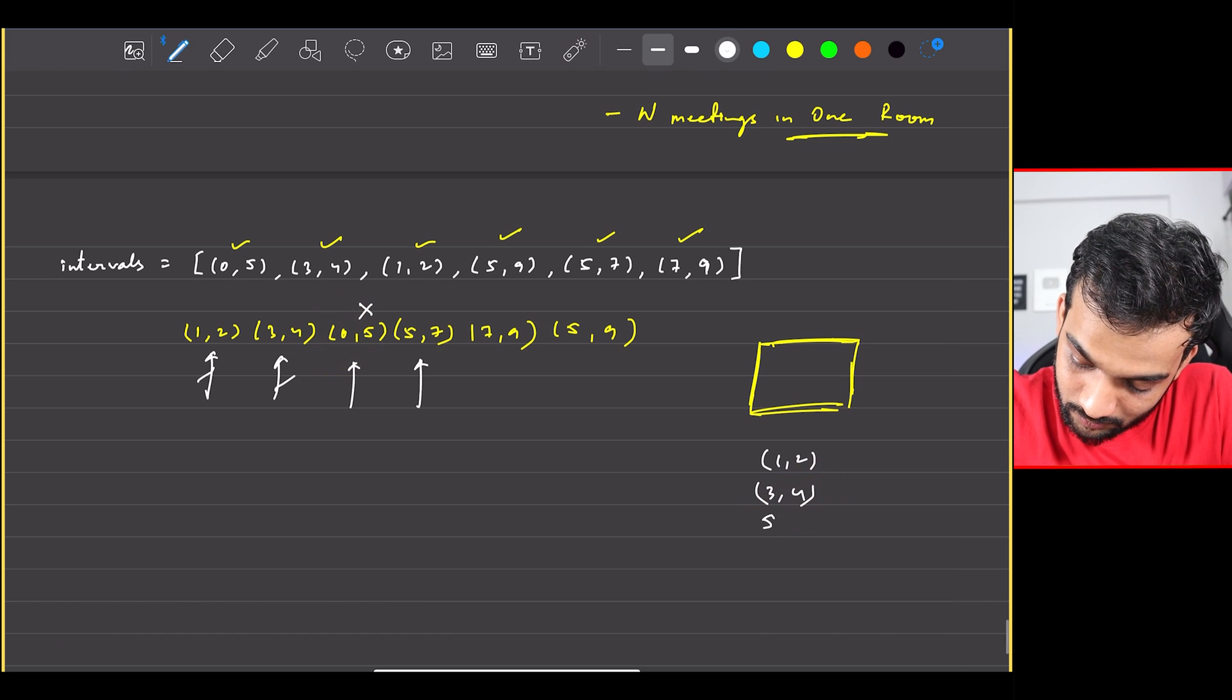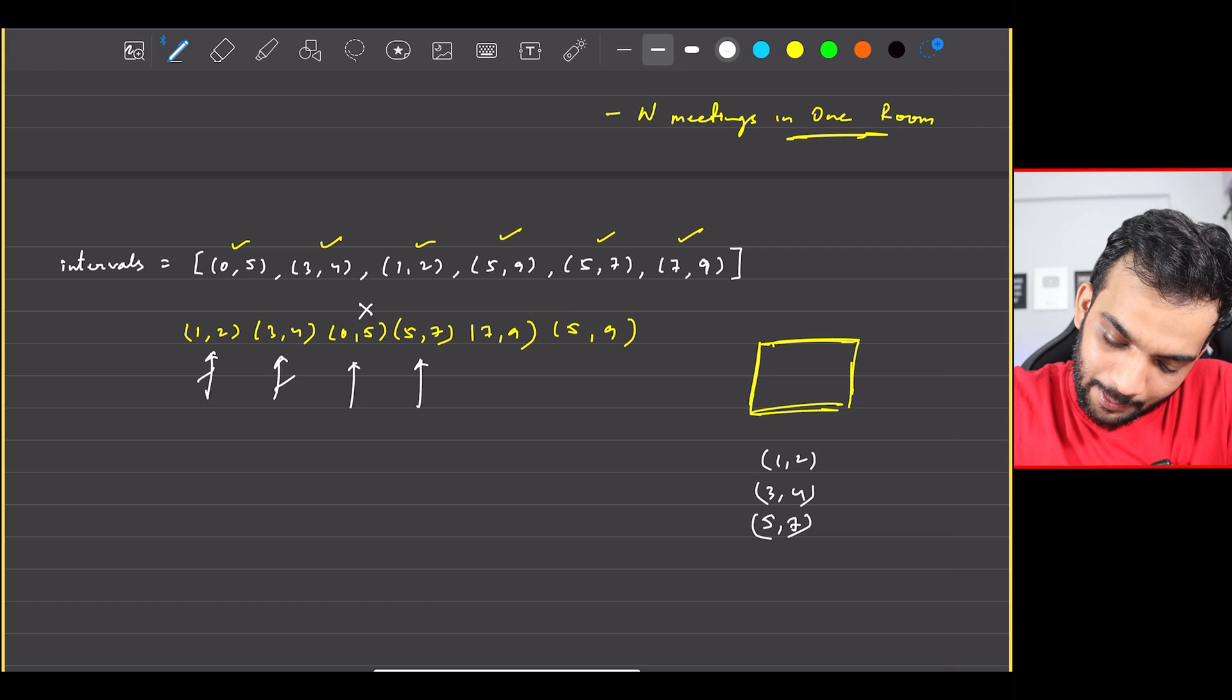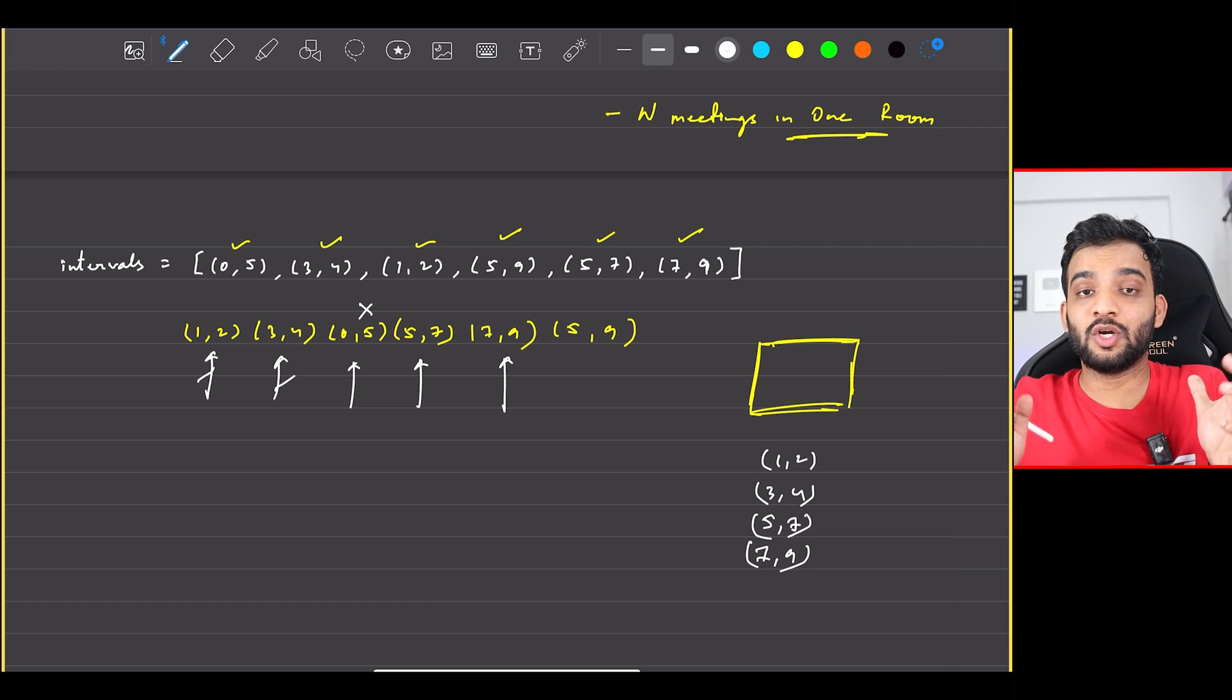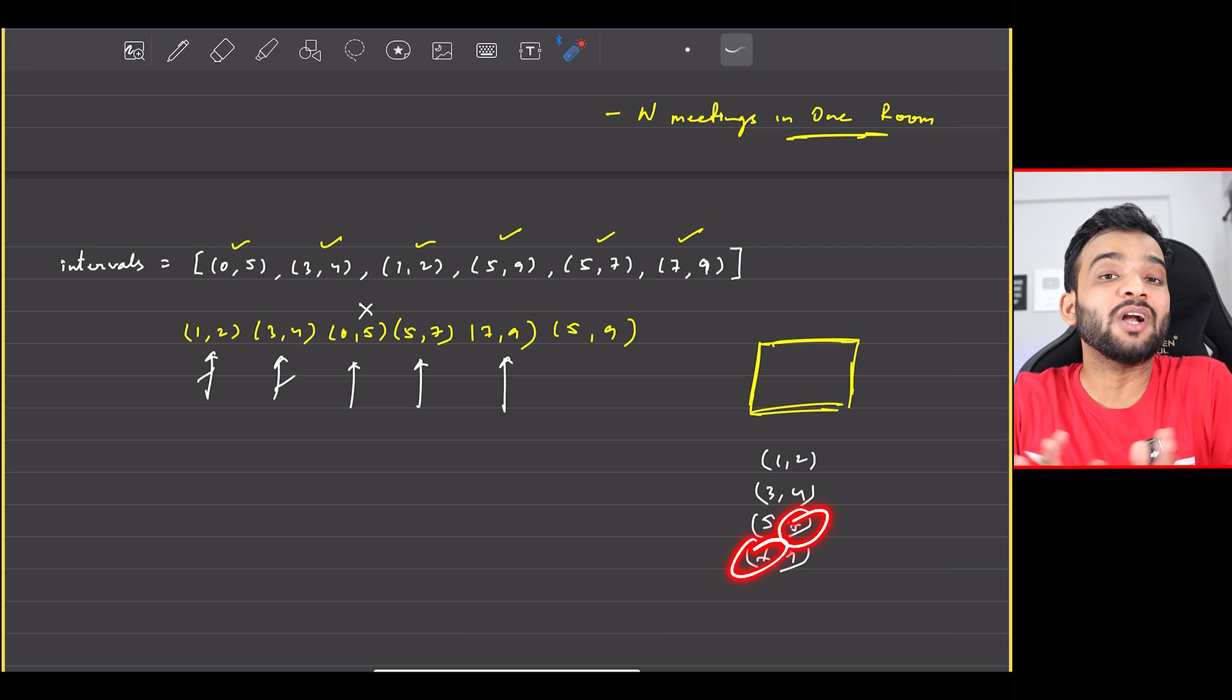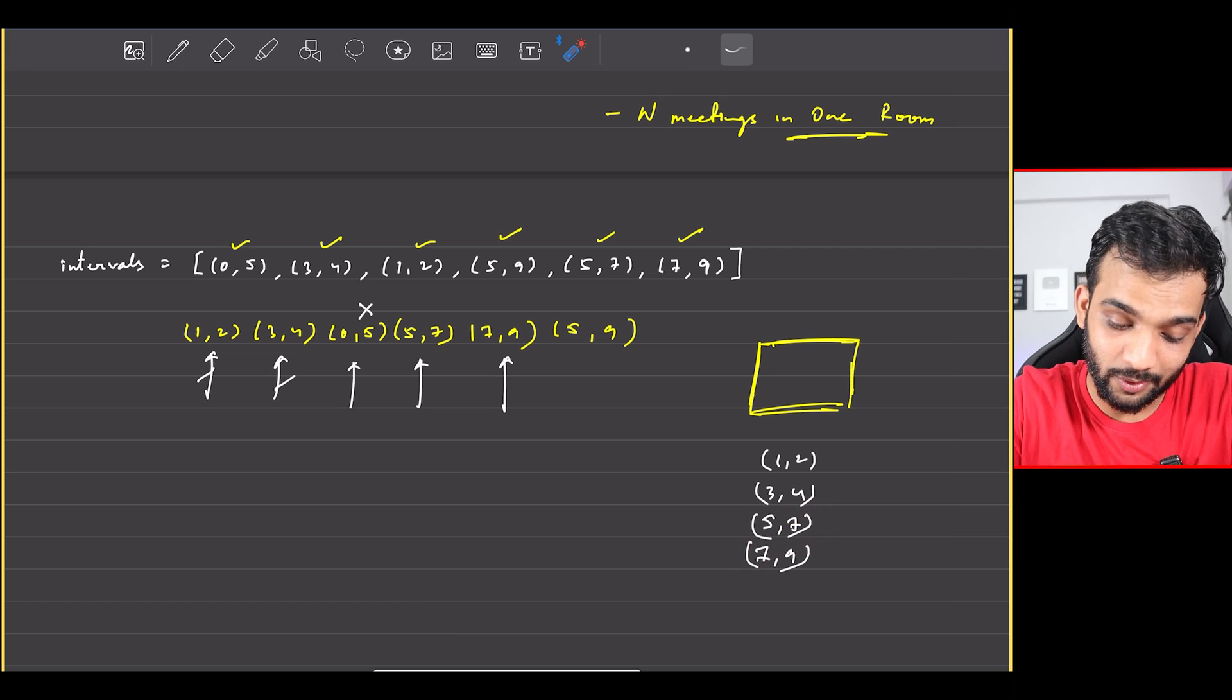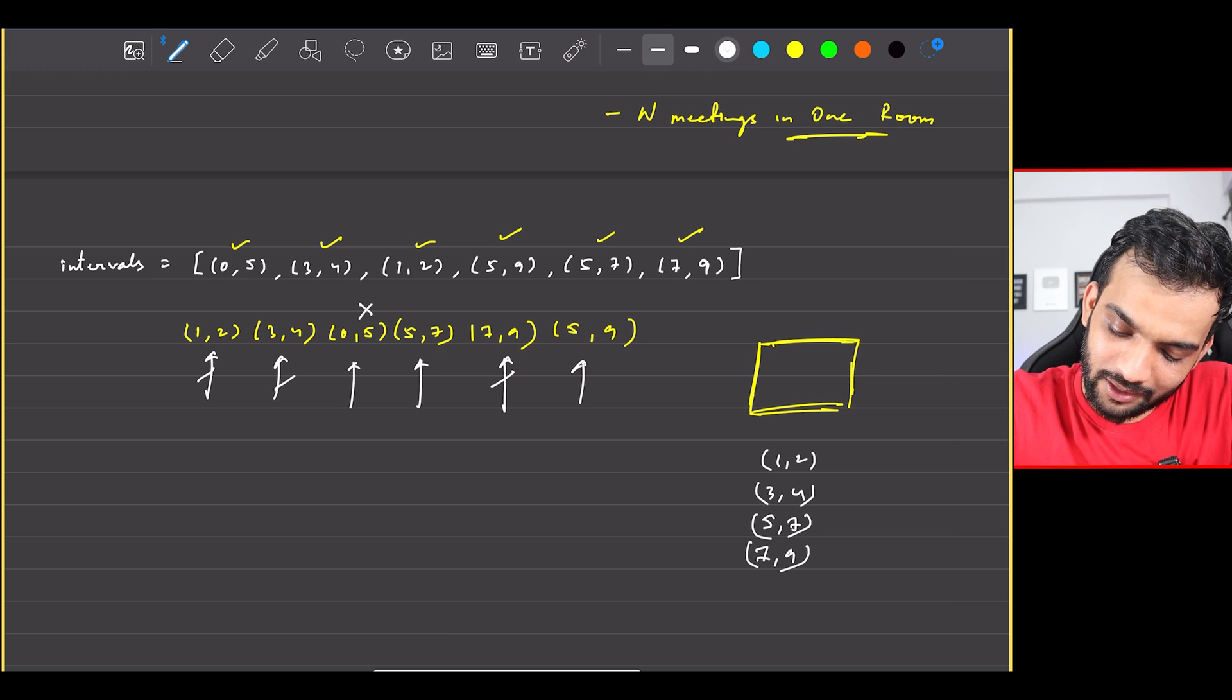Can I perform (5,7)? Yes. Can I perform (7,9)? Yes, for this particular question, because 7 and 7 is not considered to be overlapping for this question. I can, I can, okay.